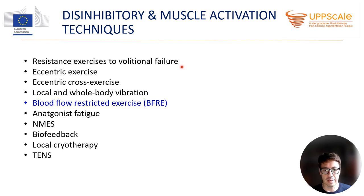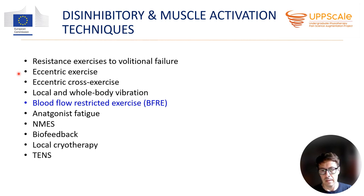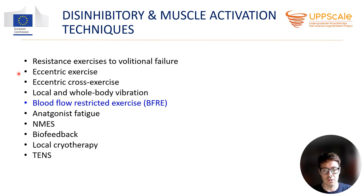Eccentric exercises to volitional failure are especially popular in later phases of rehabilitation in more demanding patients such as sportsmen, because they produce high loads on the muscle. Eccentric exercise training has been around in physiotherapy for quite a long time. It's effective for treating tendinopathies and also treating chronic pain due to tendinopathies. But it is also very effective for activating muscle, because muscle force produced during the eccentric phase of contraction is much higher than during the concentric or isometric phase. So eccentric exercises can really stimulate muscle activation.